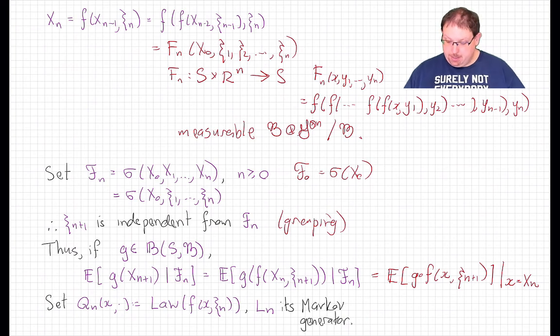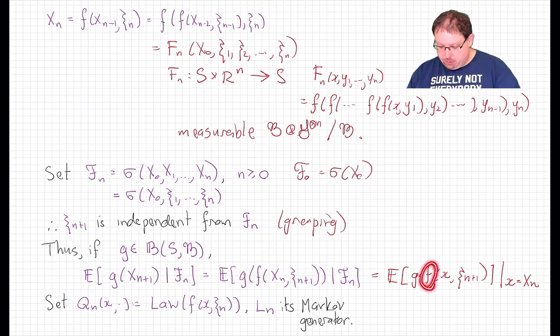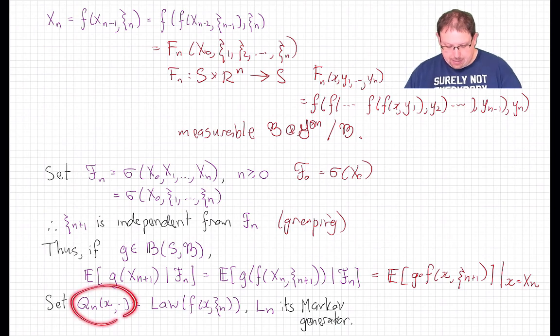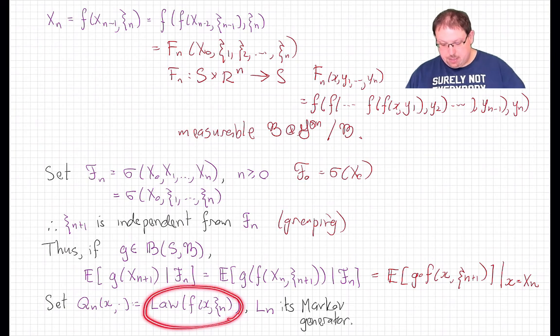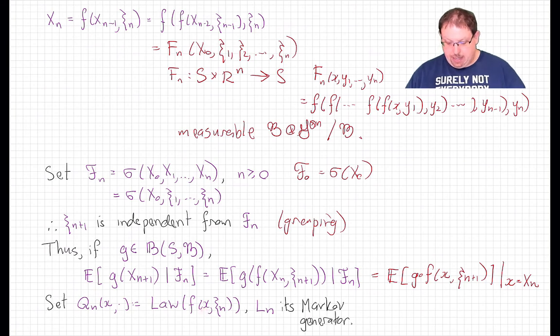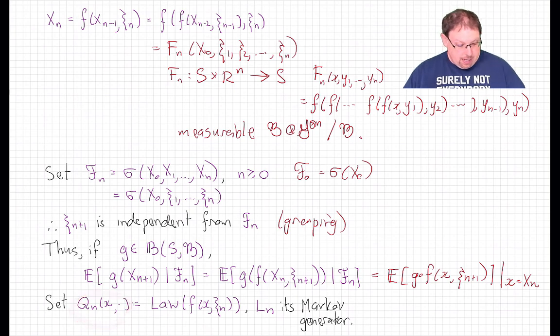There is an associated probability kernel here that we get from this formula. If I take, for my fixed dynamic function f, and for any input point in the state space x, q_n(x, B) to be this law, this measure at B, that is the law of the random variable ξ_n inputs to f(x, ξ_n). That gives me, for each x, a probability measure, and that is a probability kernel.